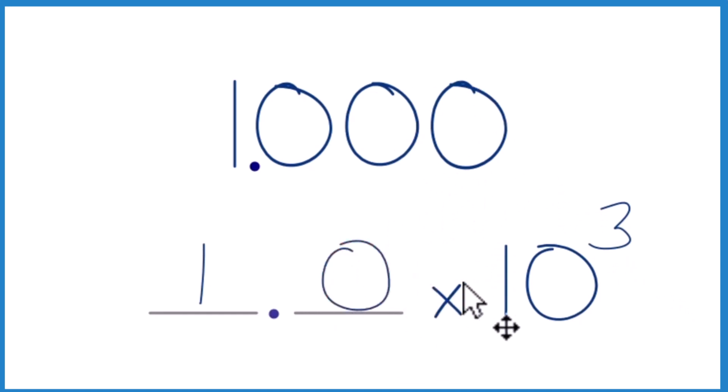Personally I would just write it as one times 10 to the third. But that's how you write one thousand in scientific notation. It's one times 10 to the third, you might see it 1.0 times 10 to the third.